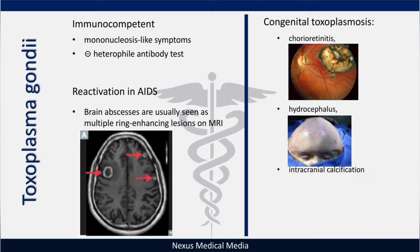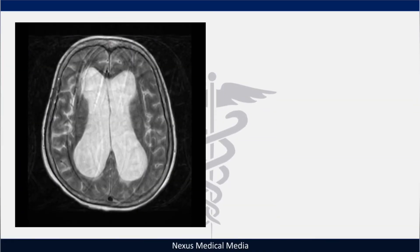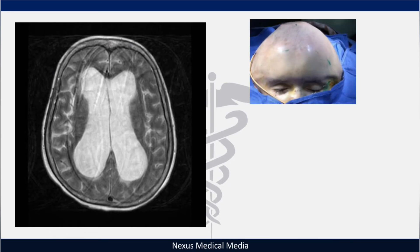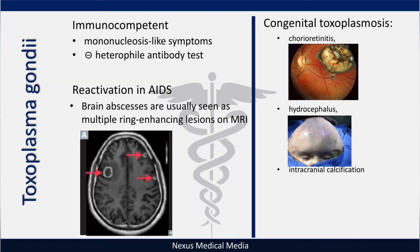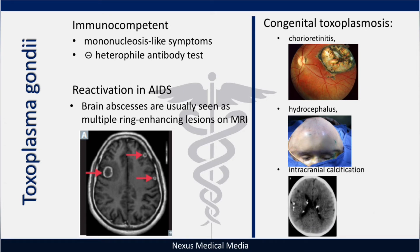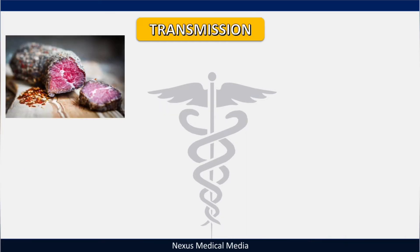If you zoom in here you can see the enlargement of the ventricles. You can see this enlarged head of the child due to the cerebrospinal fluid accumulation. The specific sign seen before hydrocephalus is called sunset eyes.